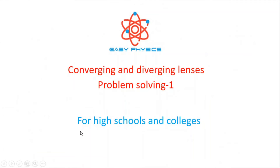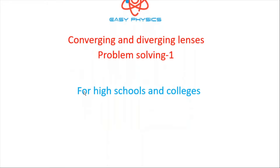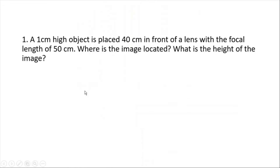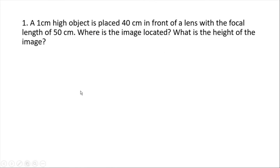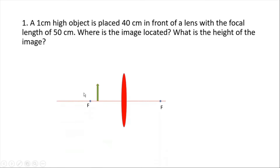Let's solve some problems related to image formation in converging and diverging lenses. Here is the first problem: a 1 centimeter high object is placed 40 centimeters in front of a lens with a focal length of 50 centimeters. What is the image location and what is the height of the image?